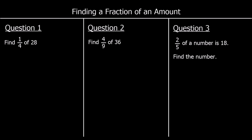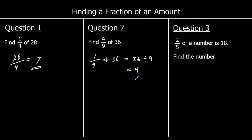Let's finish up with three questions. Question one: find one quarter of 28. Split 28 into four equal parts. 28 divided by four is seven, so four sevens make 28, and one quarter is seven. Question two: find four ninths of 36. To find one ninth of 36, we do 36 divided by nine, which is four. So one ninth of 36 is four. Four ninths is going to be four times four, which is 16. So each ninth is worth four, and we've got four of them — four fours is 16.